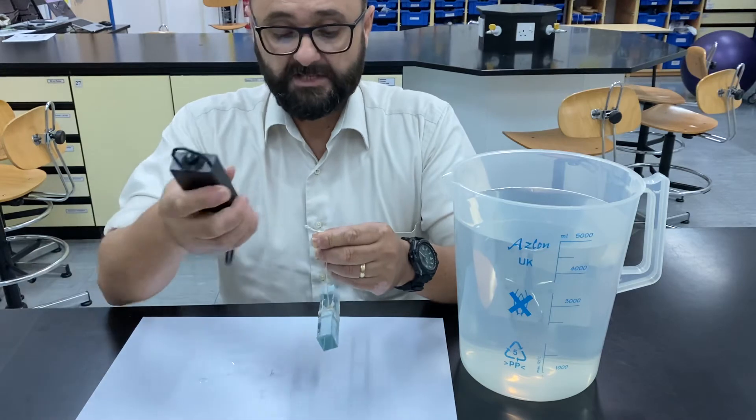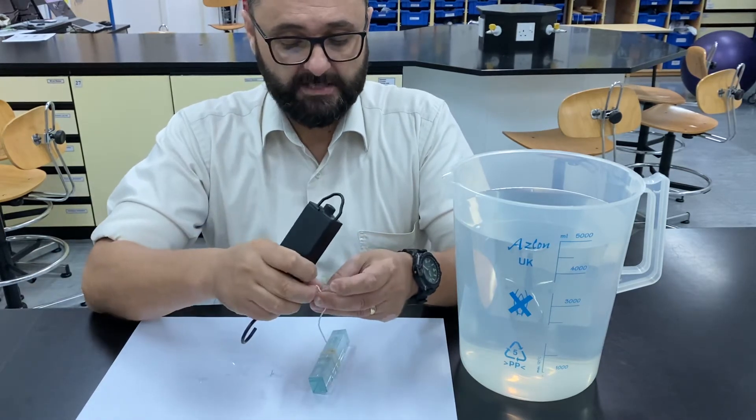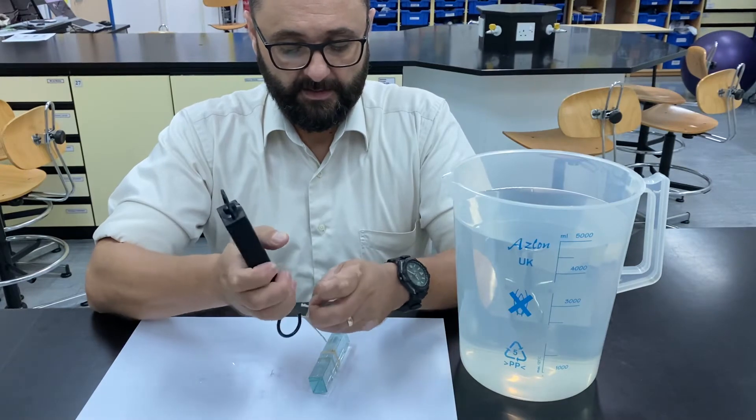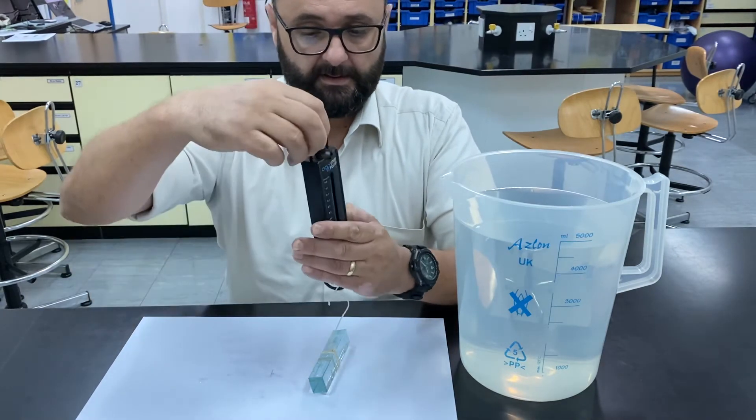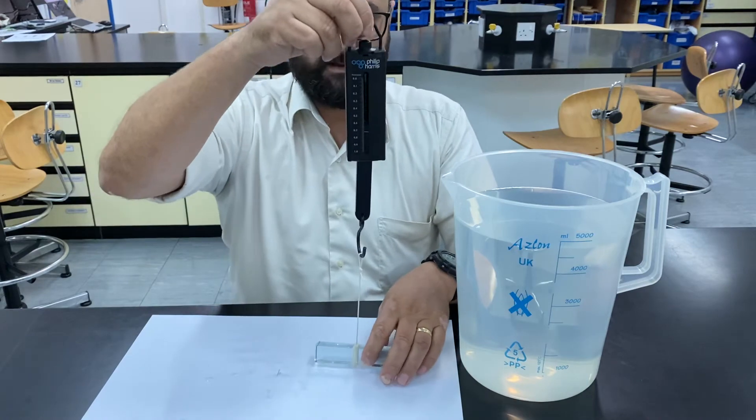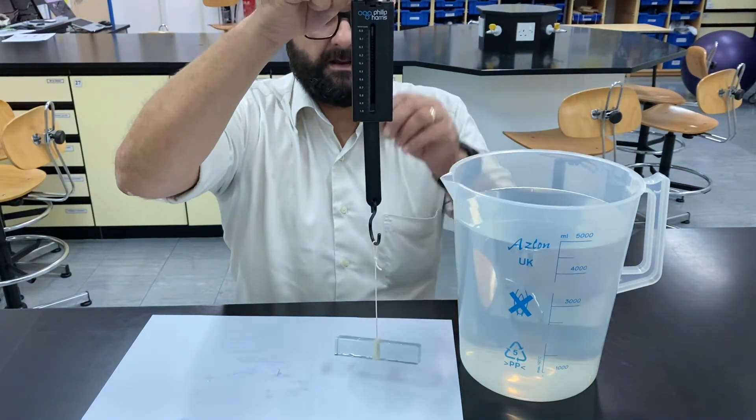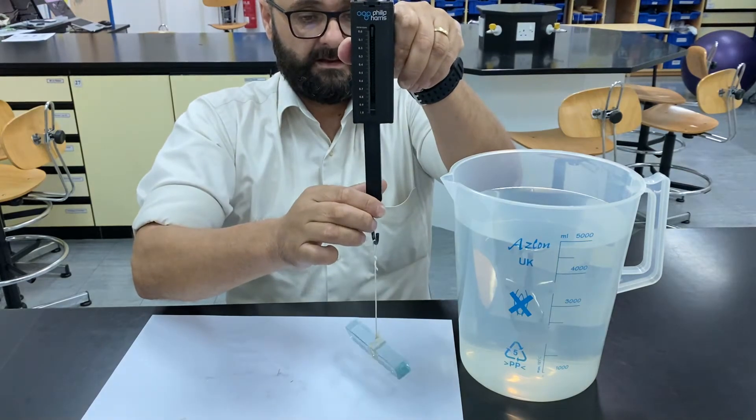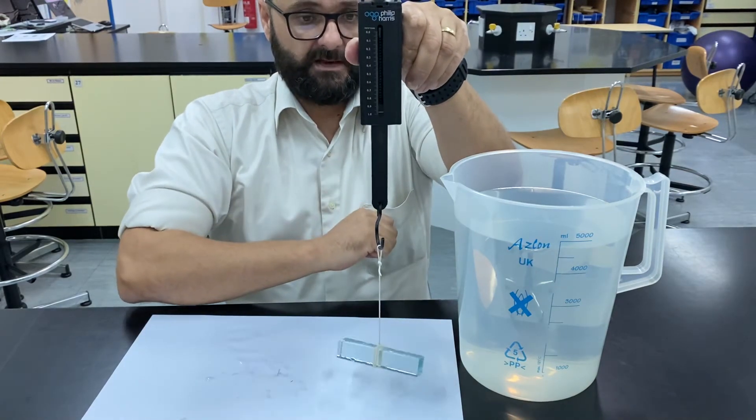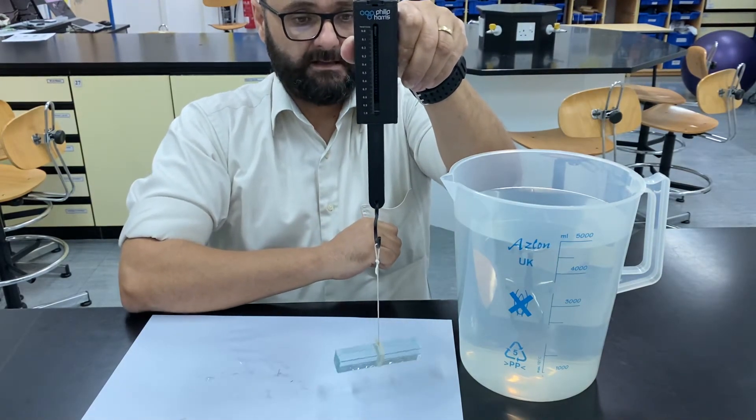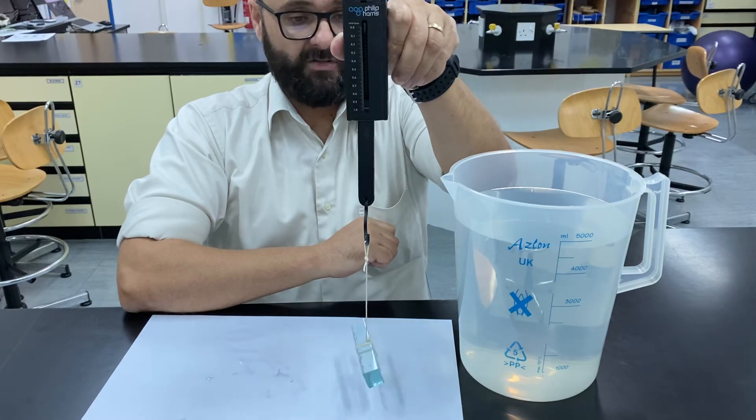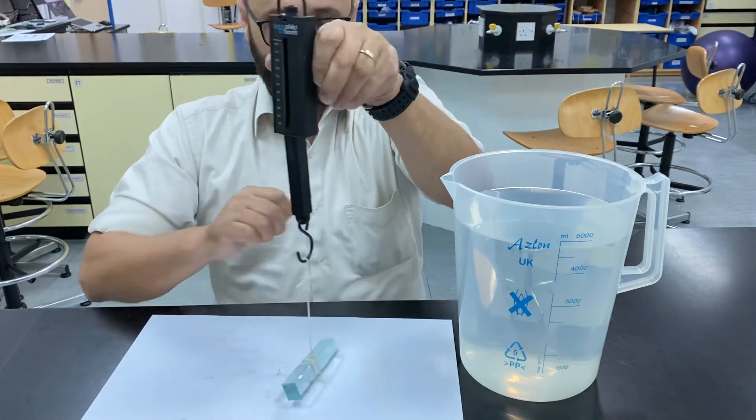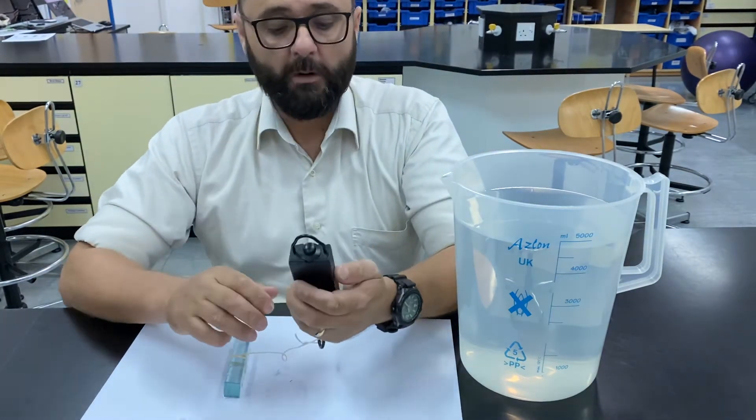We need two measurements there. Firstly, we need the actual weight of the block. Now I've got a newton meter here. Now the weight, that's the force pulling down on that glass block, is 1.0 newtons.